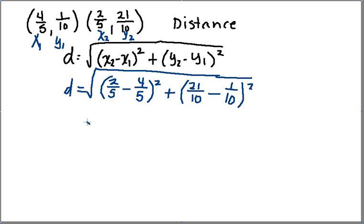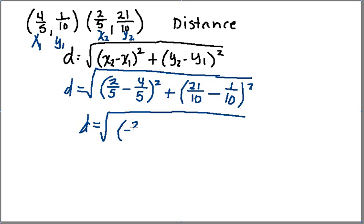Alright, and in this particular case I don't have to find a common denominator yet, because I've got two-fifths minus four-fifths. I know that is negative two-fifths — still got to square it — plus, I don't have to find a common denominator here either, because it's twenty-one over ten minus one over ten, which gives me twenty over ten, and I still have to square that.